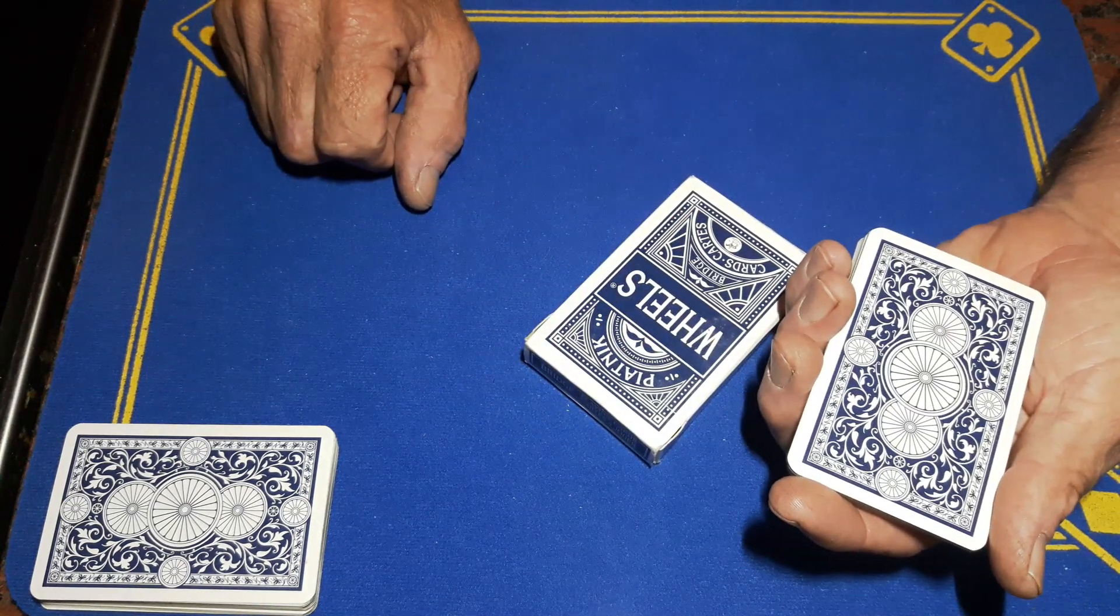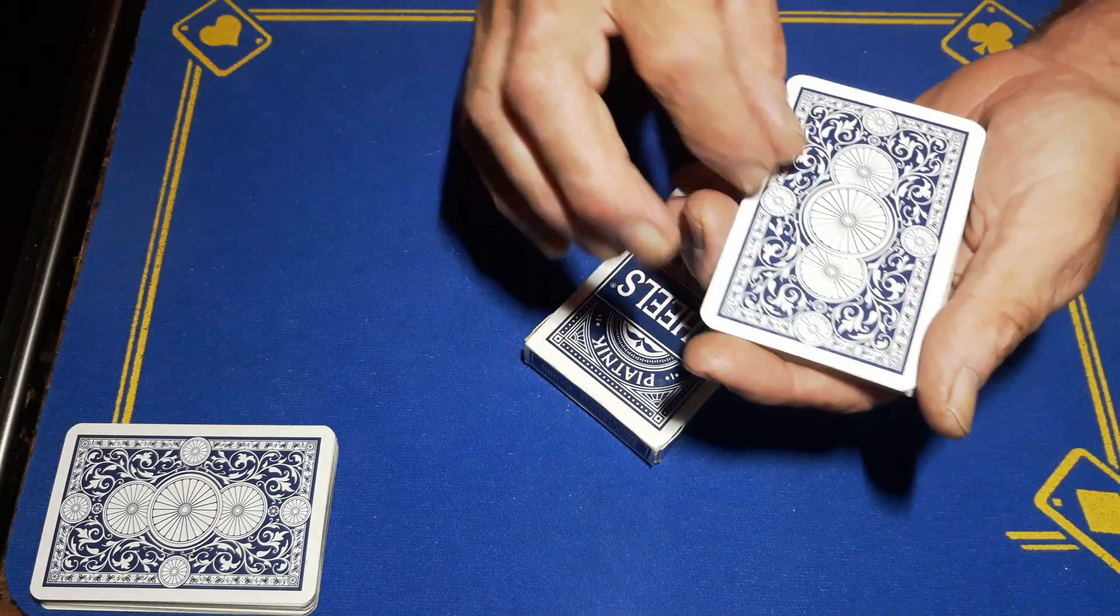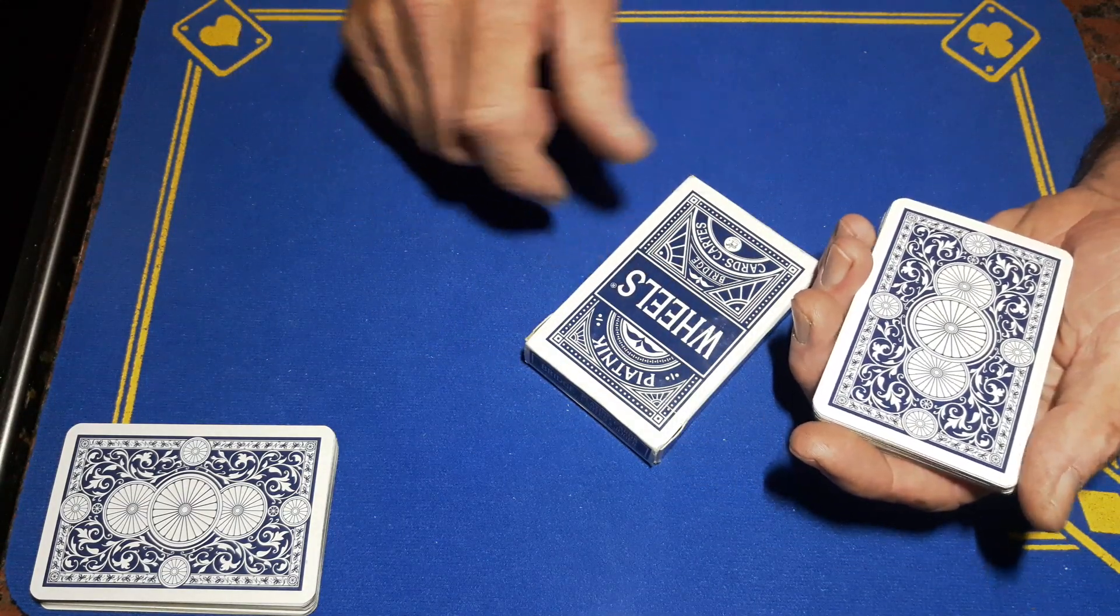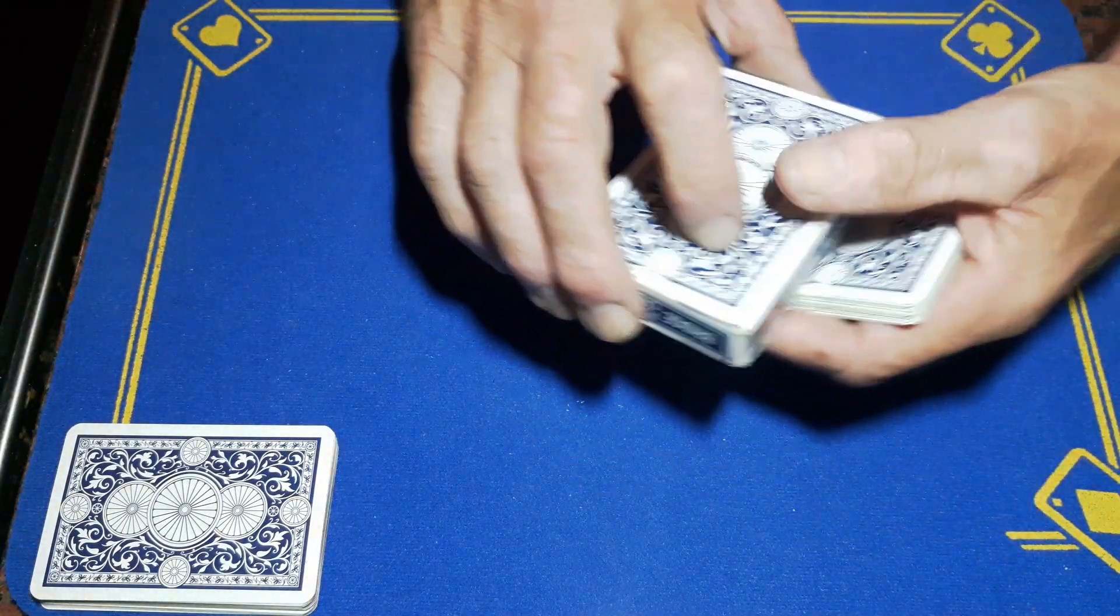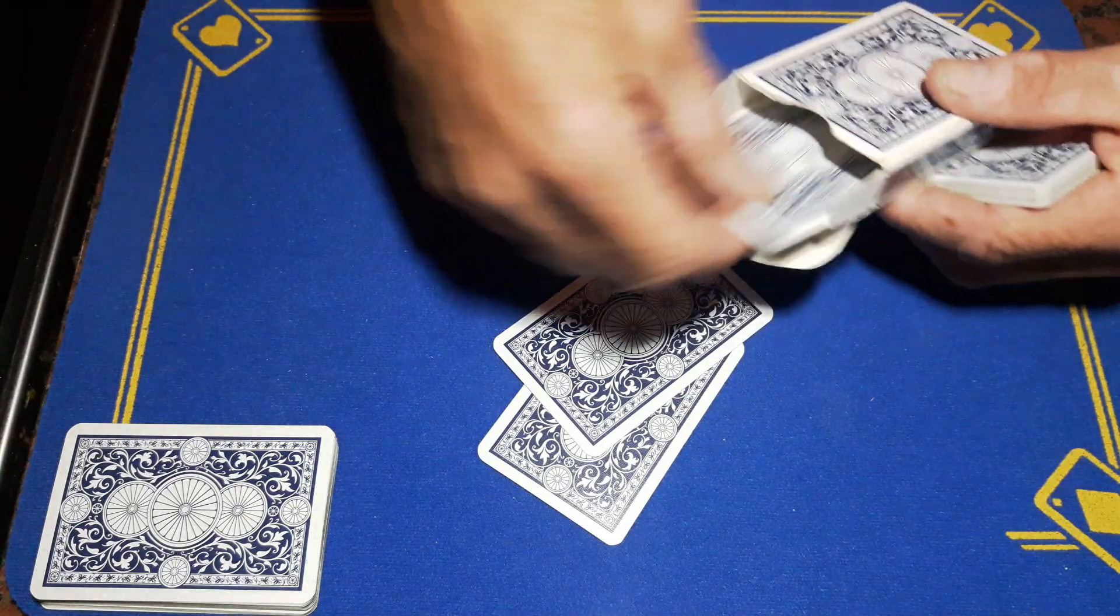And send them into the box. I know that's hard to believe, but I'm going to take one, two, three. So believe it or not, there are now three cards inside the box. Let me just show you: one, two, three.